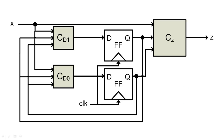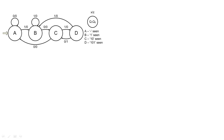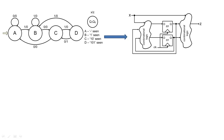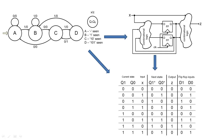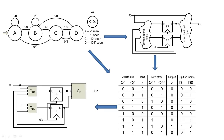You could use either a truth table or K-map to design these combinational circuits. To design our sequential circuit, we first created a state diagram. Then, we determined the general form of our circuit. Then, we translated our state diagram into a next state table. And finally, we used that next state table to create our final circuit.